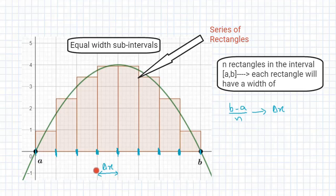If I know the width of each rectangle, the next thing that remains is what is the height of the rectangle. Depending upon the height of the rectangles, the Riemann sum can be divided into three types: Left Riemann sum, Right Riemann sum, and Midpoint Riemann sum.